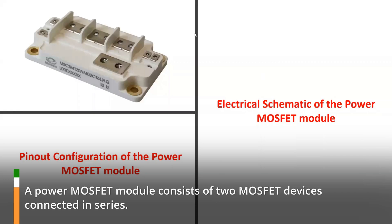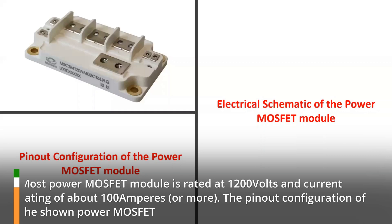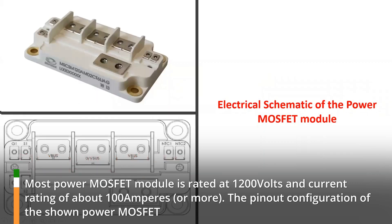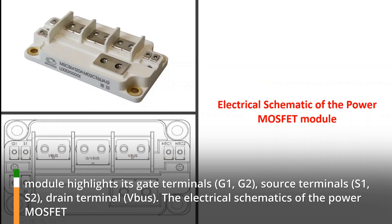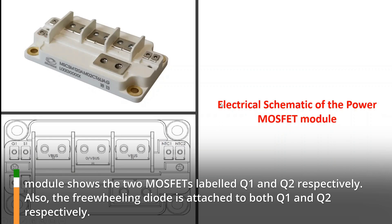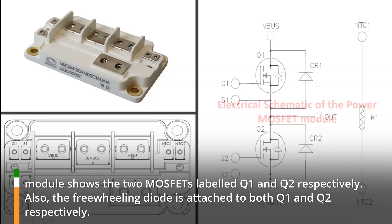A power MOSFET module consists of two MOSFET devices connected in series. Most power MOSFET modules are rated at 1200 volts and a current rating of about 100 amperes or more. The pinout configuration of the shown power MOSFET module highlights its gate terminals G1 and G2, source terminals S1 and S2, and drain terminal bus. The electrical schematic shows the two MOSFETs labeled Q1 and Q2, with a freewheeling diode attached to both Q1 and Q2 respectively.